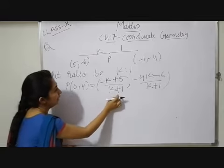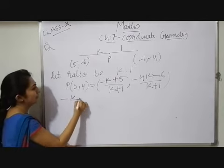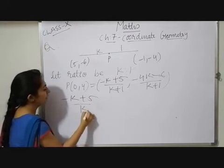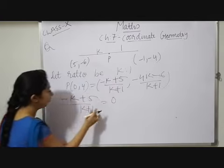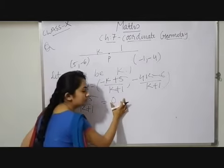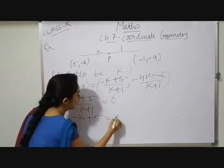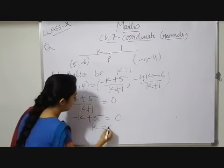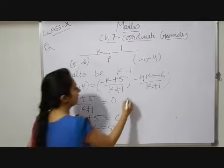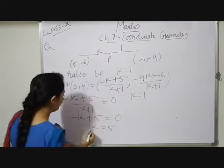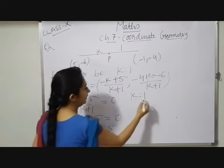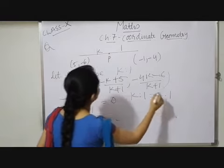So here X coordinate point here I will equate. So -K plus 5 upon K plus 1 which is equals to 0. K plus 1 will multiply with 0 will be 0. So now you have -K plus 5 equals to 0. So K is equals to 5. So ratio K:1, no number in our denominator keep 1. So which is equals to 5:1.